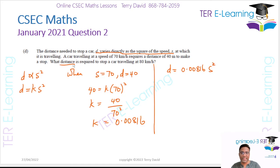Now, the question is asking me, what distance is required to stop a car traveling at 80? So all we need to do is to substitute 80 into our formula. So that's 0.00816 multiplied by 80². And we're going to get 52.2.